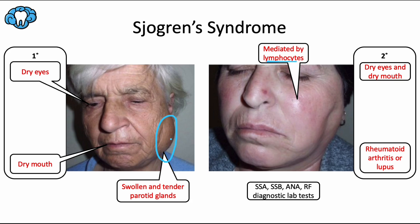Sjogren's syndrome can be classified into two main categories. Primary, which means you have only the primary symptoms of dry eyes and dry mouth. And secondary, which is much more common, which means you have those same classical symptoms plus another autoimmune connective tissue disease, usually rheumatoid arthritis or sometimes lupus erythematosus.